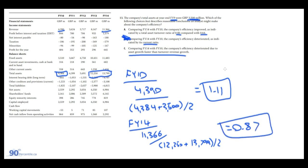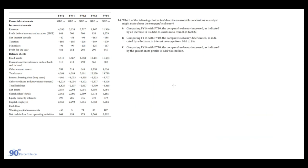Efficiency decreased from 2010 to 2014 because the company is not generating as much revenue relative to their asset base. Coming back to the answer choices, option A showed 0.86 versus 0.64 — those numbers appear to use fixed assets instead of total assets, which is incorrect. The correct calculation confirms efficiency deteriorated, so the answer is C.